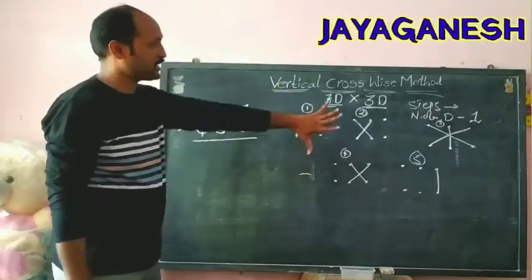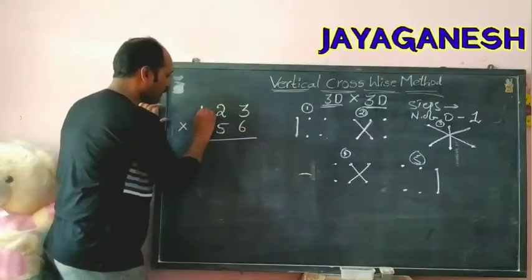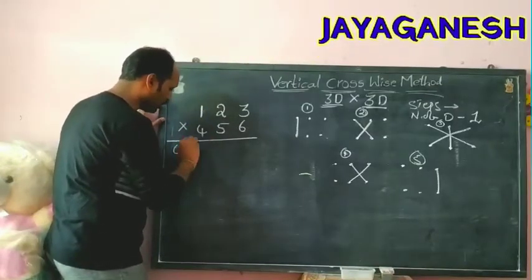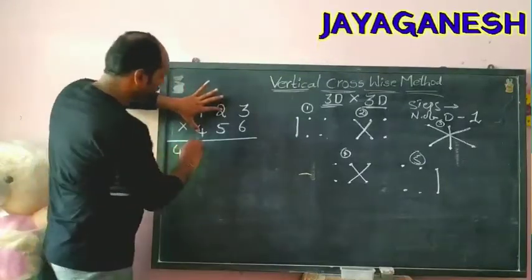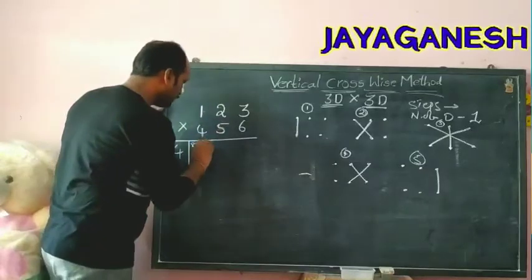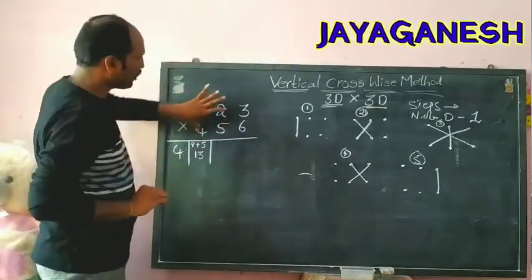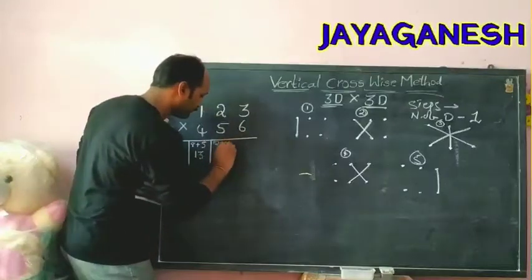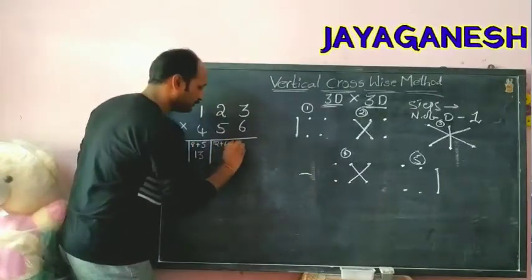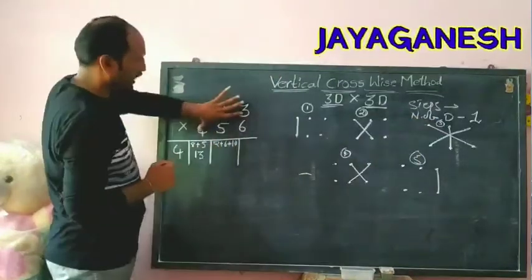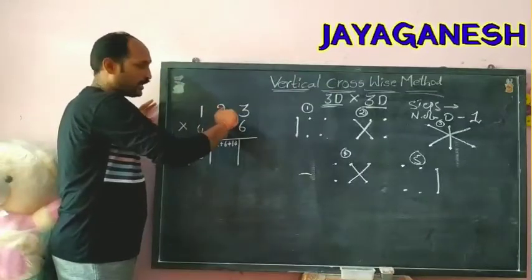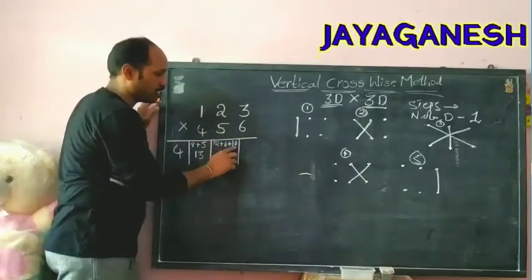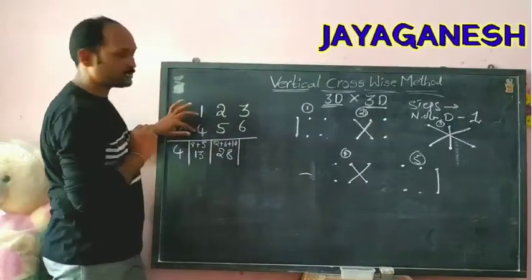This is the five-step crisscross method for triple digits. Step 1: multiply 4 × 1 = 4, write 4. Step 2: (4 × 2) + (5 × 1) = 8 + 5 = 13, write 13. Step 3: (4 × 3) + (6 × 1) + (5 × 2) = 12 + 6 + 10 = 28. Last to last, then middle — 12 + 6 = 18, 18 + 10 = 28.